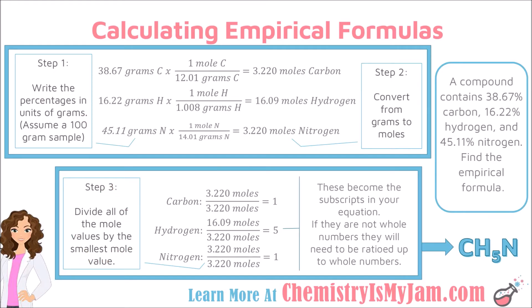Step 3 is to divide all of the mole values by the smallest mole value. My mole values are 3.22 for carbon, 16.09 for hydrogen, and 3.22 for nitrogen. The smallest value is 3.22, so I divide all of those numbers by 3.22. Carbon gives 1, hydrogen gives 5 (16.09 ÷ 3.22), and nitrogen gives 1. These numbers become the subscripts: one carbon, five hydrogens, and one nitrogen in the empirical formula.